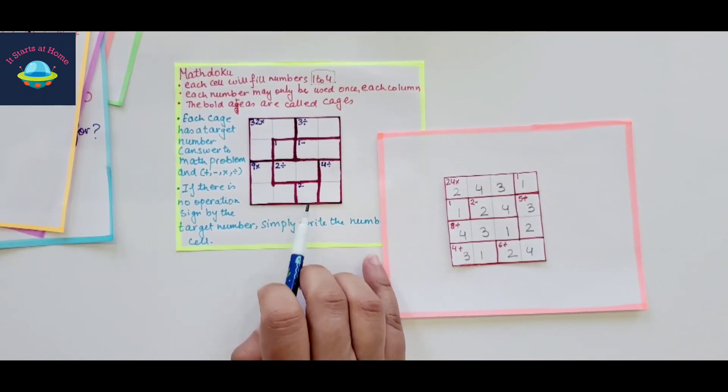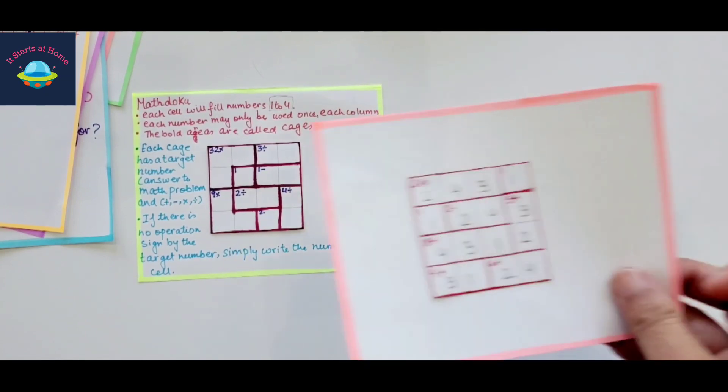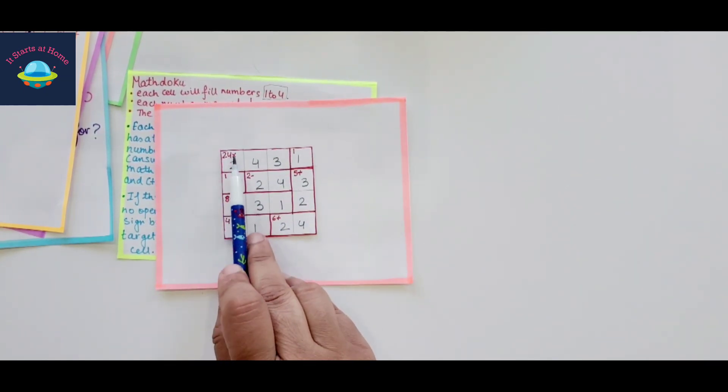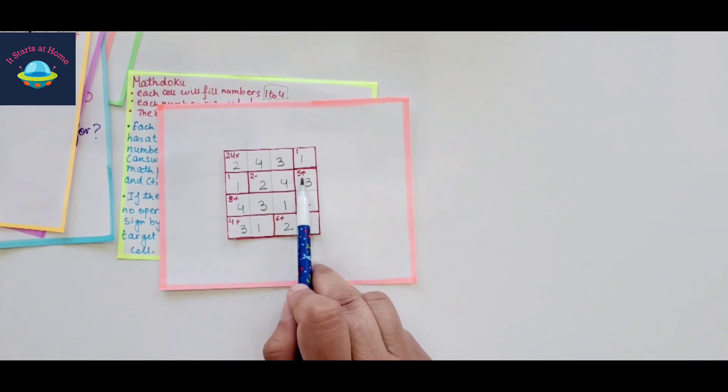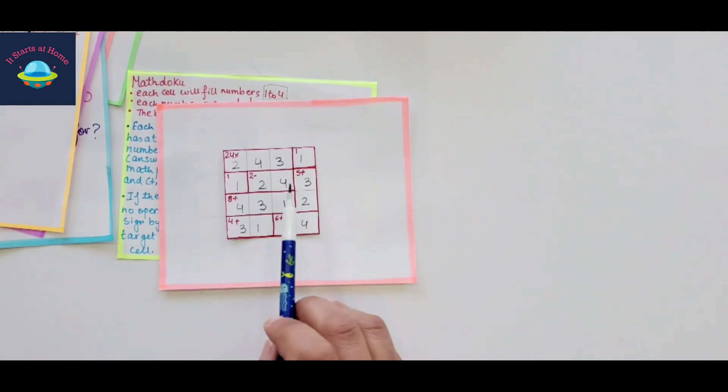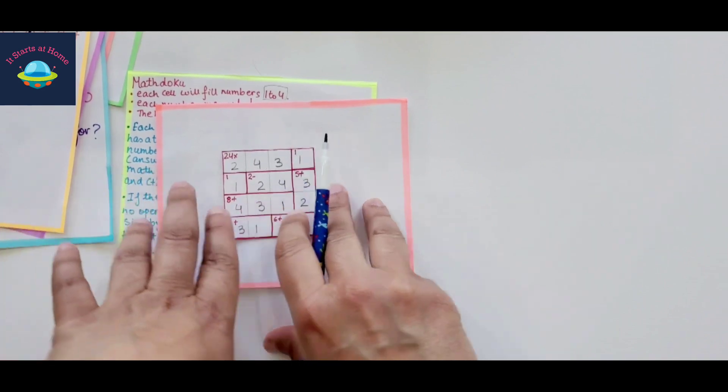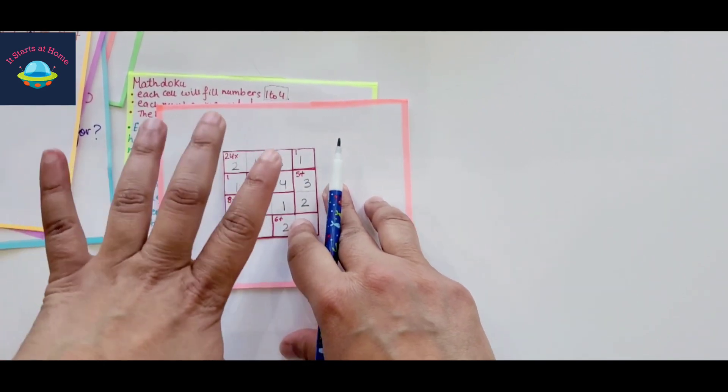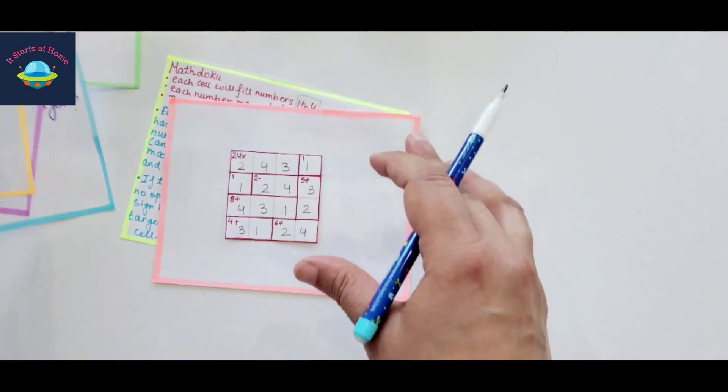Each cage has a target number and that's the answer to the math problem. It could be plus minus multiplication or division if that's what your child is doing. So I have used all four here. You could just use only addition or only subtraction. If there is no operation signed by the target number, simply write the number in the cell. So we had 24 into here. And I had one, I had 5 plus 3, 5 plus here. So there was a number of combinations that I've used here to solve this question. I know this might be a little more difficult, but if you want me to do a separate video of explanation for the Math Dooku, I would be happy to do that.